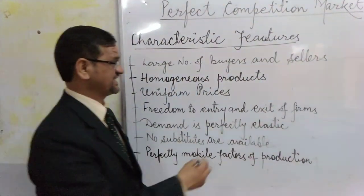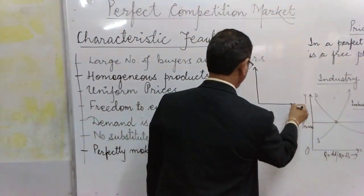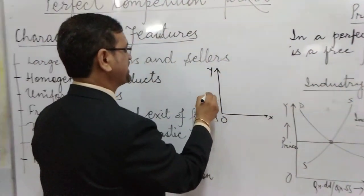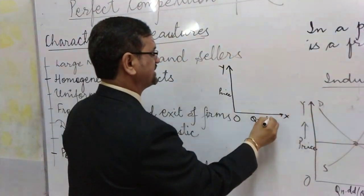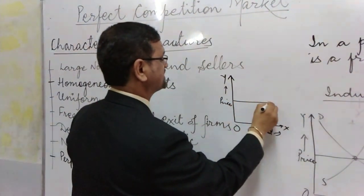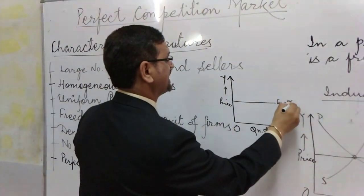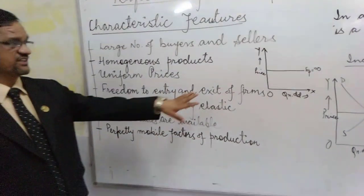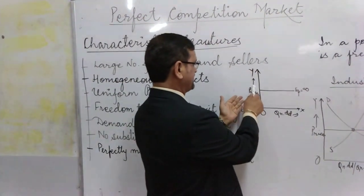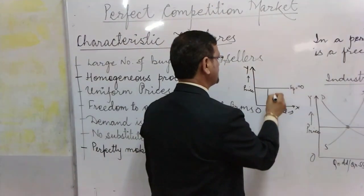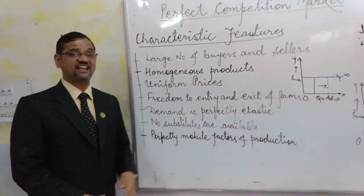Here the demand is perfectly elastic. If I draw a demand curve for a perfect competition market, with price on the Y-axis and quantity demanded on the X-axis, the demand curve is a horizontal straight line. Ep is equal to infinity. There is perfectly elastic demand where the price remains the same whether you demand less or demand more — you are going to pay the same price. That's why it is called perfectly elastic demand.